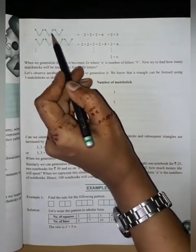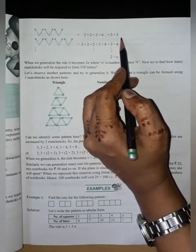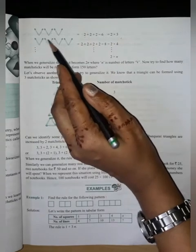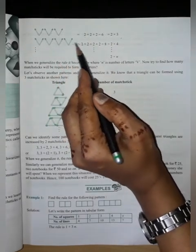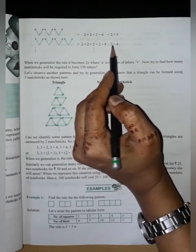One, two, three, four, five, six. So two plus two plus two is equal to six, means two into three. One, two, three, four, five, six, seven, eight. Means two plus two plus two plus two is equal to eight. Two into four.